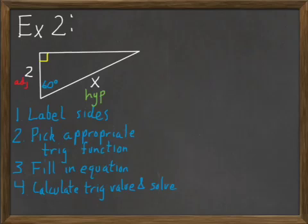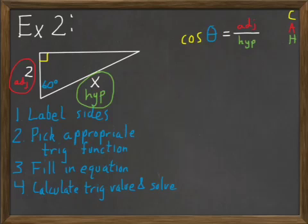So we need to pick the appropriate trig function for this problem. I have the adjacent and the hypotenuse labeled on this triangle. Which of my trig functions uses the adjacent and hypotenuse? Which part of our acronym SOHCAHTOA uses A and H? Well that's the CAH part. So SOHCAHTOA has C-A-H, so that means I'm going to need to use the cosine function for this problem. Let me fill in the equation. The angle theta is 60, the adjacent is 2, and the hypotenuse is x.